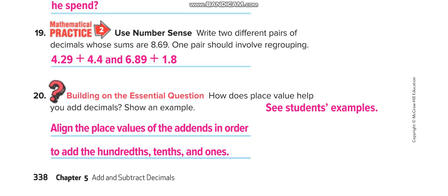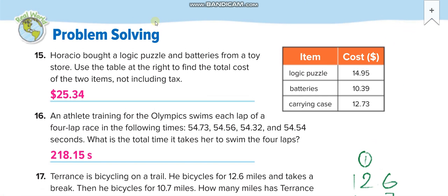Horacio bought a logic puzzle and batteries from a toy store. Use the table to find the total cost of two items, not including tax: logic puzzle $14.95 and batteries $10.39. We write them up and down like we did on the last page and add it. So it's $25.34.